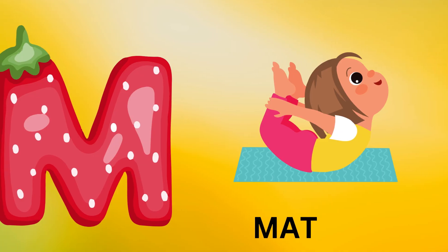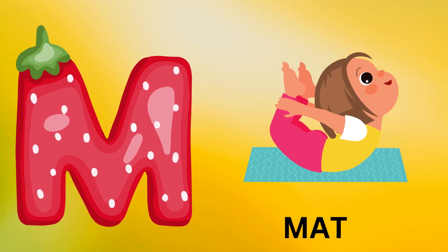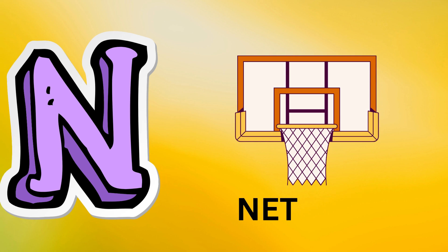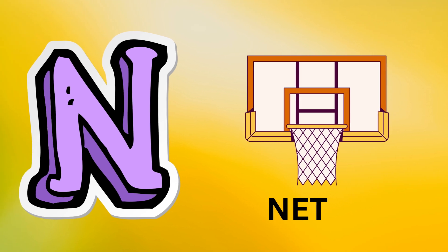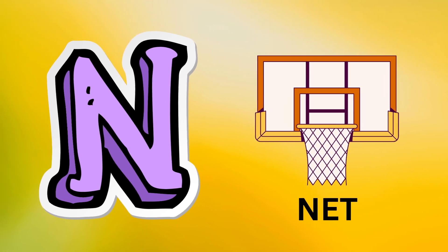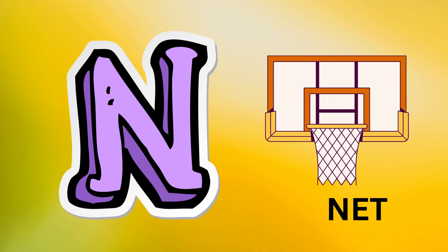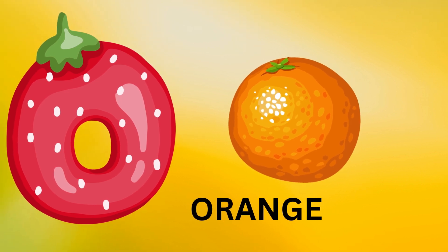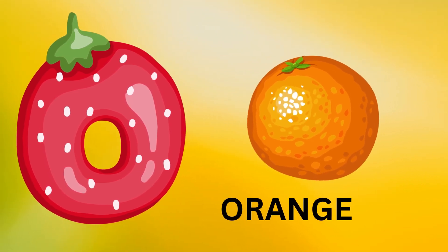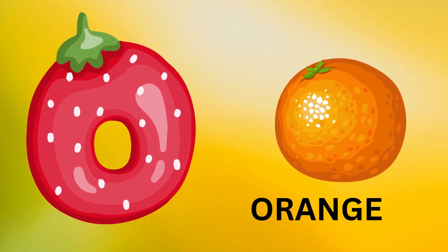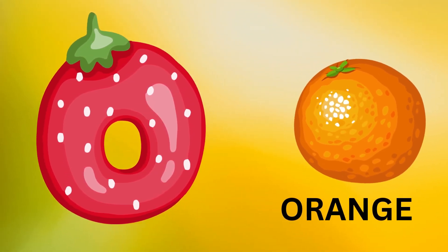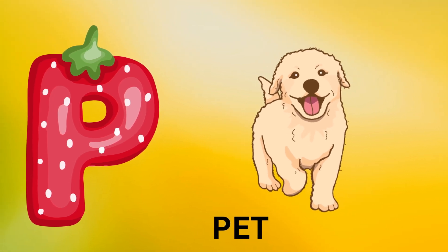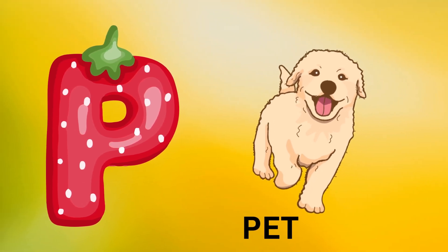M is for mat, m-m-mat. N is for net, n-n-net. O is for orange, o-o-orange. P is for pet, p-p-pet.